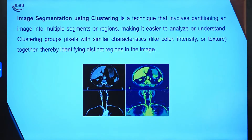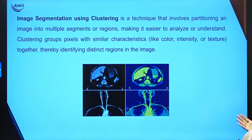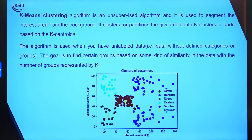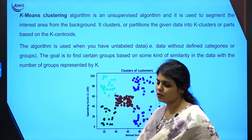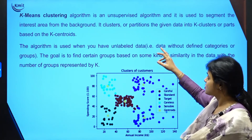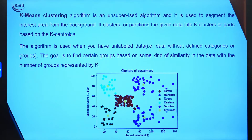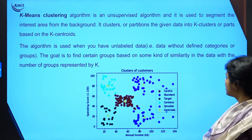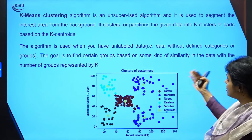When we talk about image segmentation using clustering, this is a technique that involves partitioning the image into different segments, making it easier to analyze by grouping pixels with similar characteristics. The popular techniques include k-means clustering, mean shift clustering, DBSCAN (density-based spatial clustering), and Gaussian mixture models. K-means clustering is an unsupervised algorithm used to segment the interest area from the background — dividing data into k number of clusters based on k centroids.